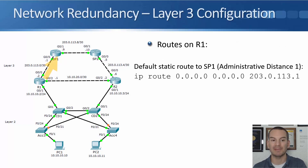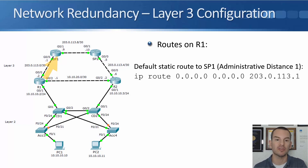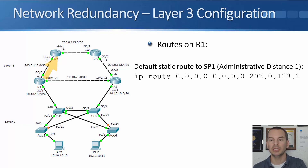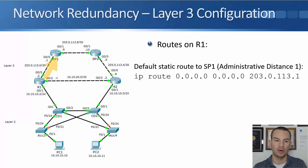Looking at path selection, which is controlled by routing — for this example I'll use static routes, but a dynamic routing protocol would work similarly. My first route on R1 is a default static route for all traffic going out to the internet, pointing at SP1, the service provider router directly attached to R1. The command is: IP route 0.0.0.0 0.0.0.0 203.0.113.1 — that's the next hop address on SP1. Because this is a static route, it has a default administrative distance of 1.